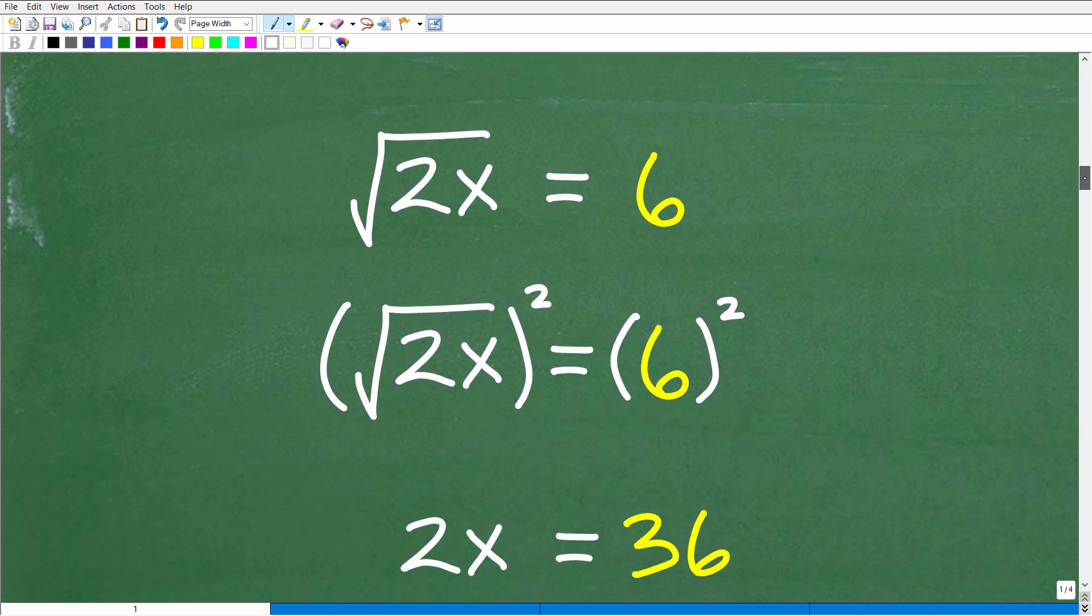All right, so here again we have the square root isolated on one side of the equation and a number. So how do we get rid of the square root? That's what we need to do because we're trying to get to this x. When you have a situation like this in algebra, what you can do is square both sides of the equation.